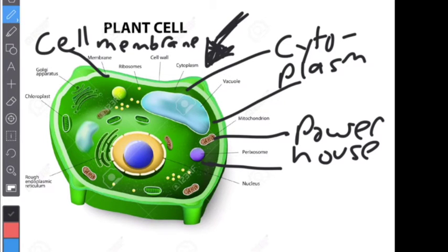What else do we need to know? We need to know the nucleus. The nucleus is the brain of the cell, so the nucleus controls all the activities of the cell.